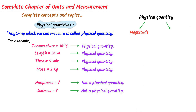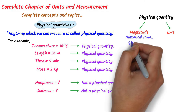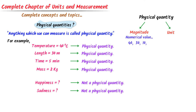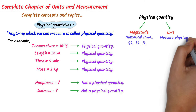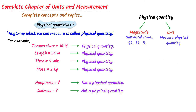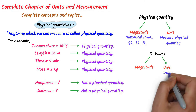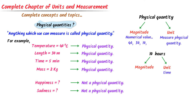Every physical quantity has two parts: magnitude and unit. Magnitude is a numerical value, like 40, 30, or 10. Unit is used to measure any physical quantity. For example, in '10 hours', 10 is the magnitude and 'hour' is the unit. The unit tells us about the physical quantity — in this case, time.